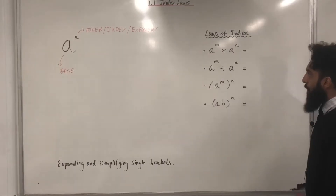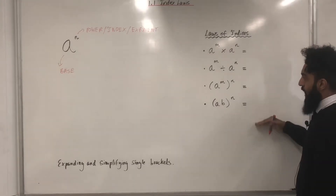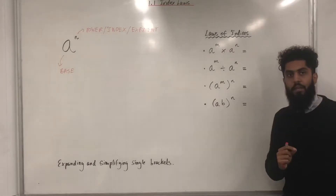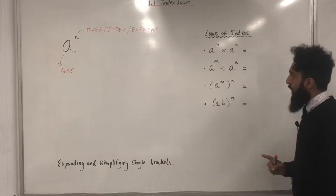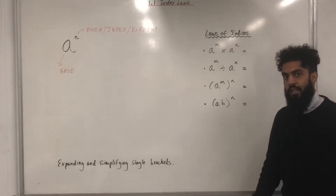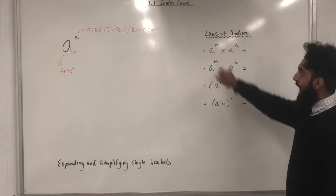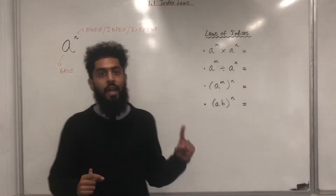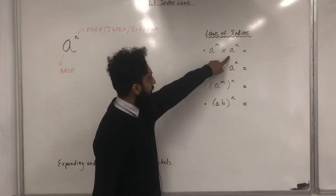Now we have some important laws of indices which you have covered at GCSE level. Let's quickly recap these laws of indices. The first one: A to the power N multiplied by A to the power N. We have the same base,